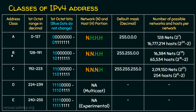We know in a class B network, the first two octets are the network portion and the last two octets are the host portion. Out of 32 bits, the first 16 bits are reserved for the network portion and the last 16 bits are for the host portion. So there is a possibility of 2 power 16 hosts and a possibility of 2 power 14 networks.